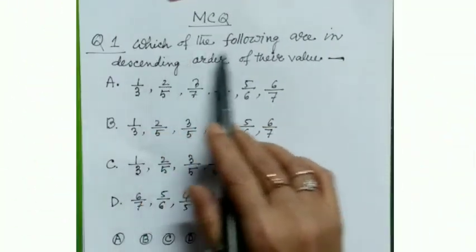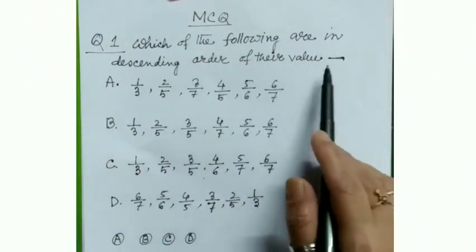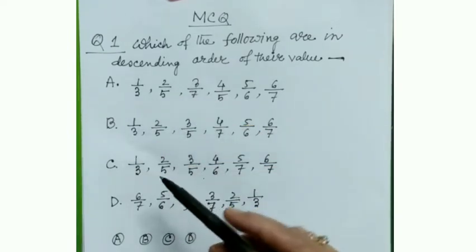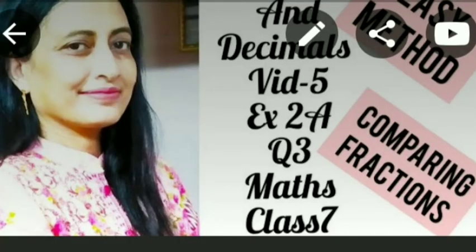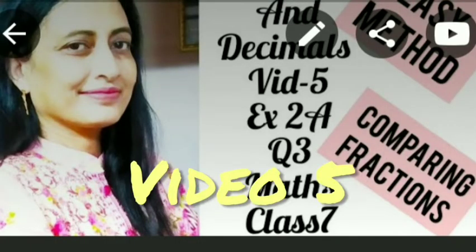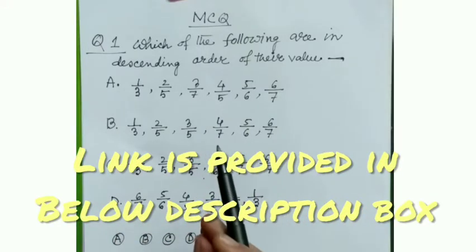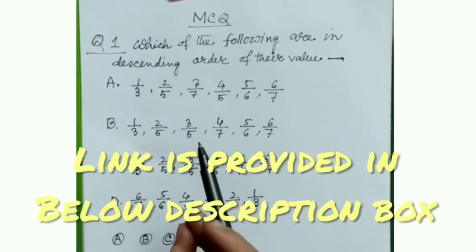MCQ question number one: which of the following are in descending order of their value? Four options are given. As I stated in the video on fractions and decimals, how to compare fractions in an easy way by using the cross multiplication method — without using paper and pen we can do this in just a few seconds. Here we will use this method.